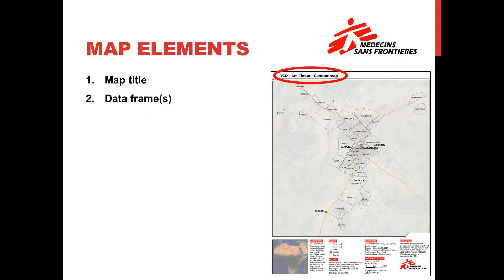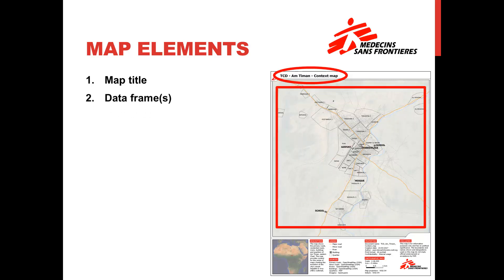2. Data frame or frames. A frame or frames housing the data displayed on the QGIS map canvas. The map on the right's data frame displays road, waterway, building, and quartier data.